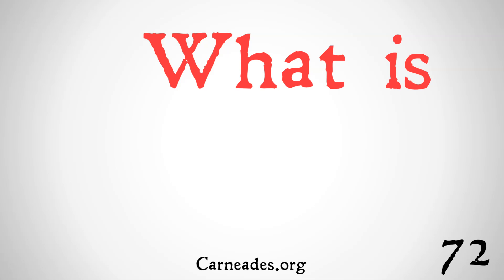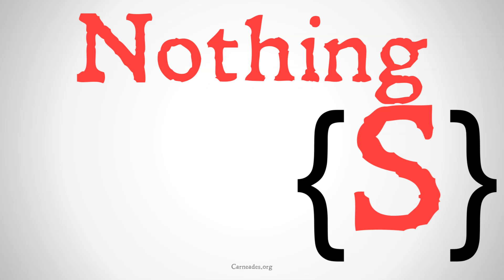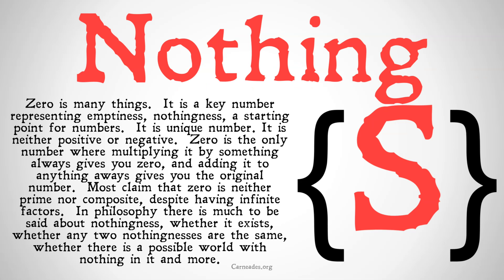Today we're going to be looking at what is zero. Zero is many things. It is a key number representing emptiness, nothingness, a starting point for numbers. It is a unique number — it is neither positive nor negative. Zero is the only number where multiplying it by something always gives you zero, and adding it to anything always gives you the original number.